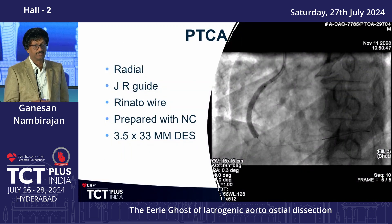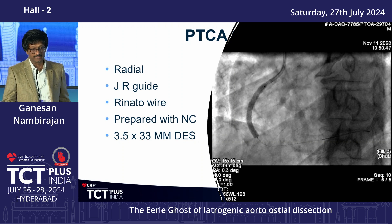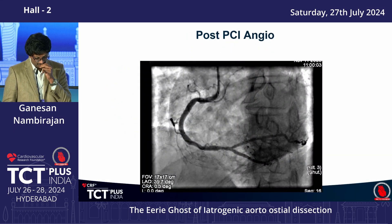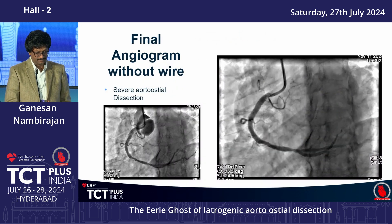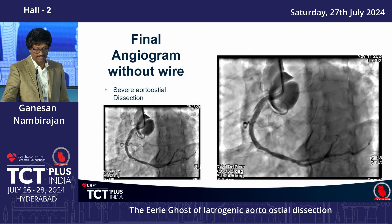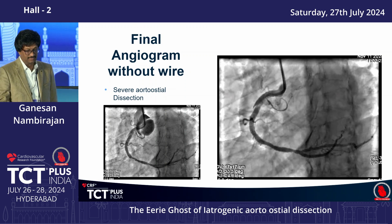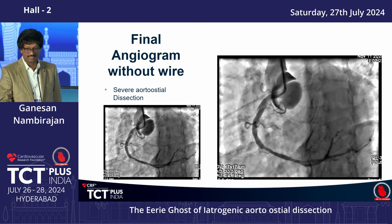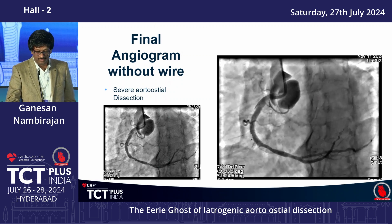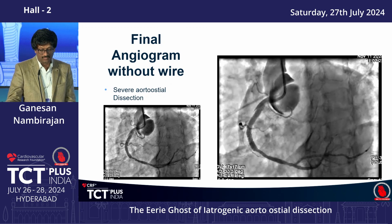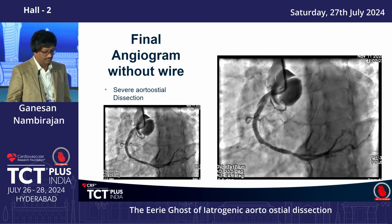It was a routine angioplasty via right radial approach. The guide and wire were prepared, an NC balloon and a 3.5x33mm drug-eluting stent was deployed. On the final angiogram after removing the wire, you can see there is an aortocoronary dissection starting at the aortic coronary cusp and extending into the ascending aorta.